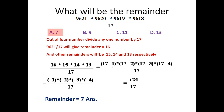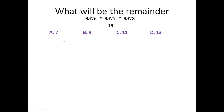So friends, this is a very simple technique which can be used to solve so many problems on remainders. Now let us take one more similar problem: what will be the remainder if 8376 × 8377 × 8378 is divided by 19?